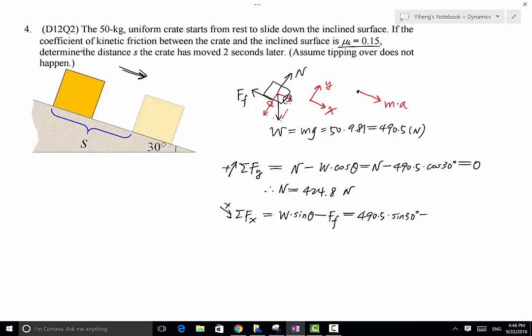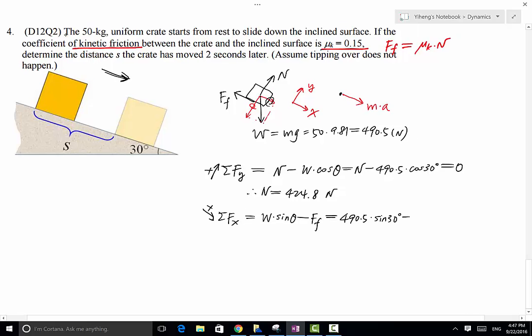In this case, you're already told that we have kinetic friction. The frictional coefficient is 0.15. Therefore, the frictional force simply equals to mu k times normal force. For here, FF equals 0.15 times normal force, which is 424.8.